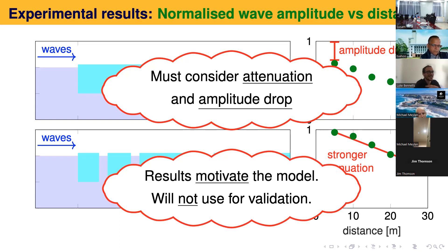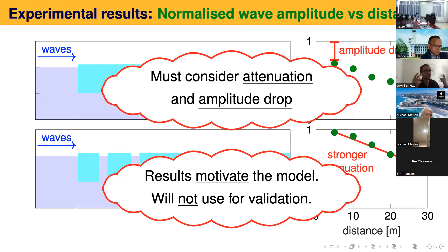The main message from these tests is that rather than just considering wave attenuation, which is what most of us do in this field, we should also consider an amplitude drop. I'm not going to try to exactly replicate what went on during the lab experiments. I'm really going to be thinking about snapshots of what the ice cover looks like at the beginning and end of the test and the way that waves propagate through those two different types of ice cover.